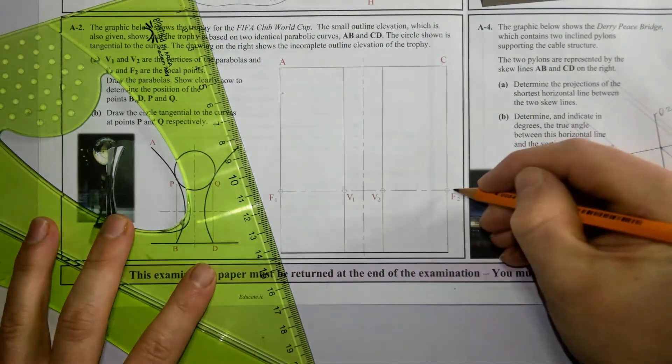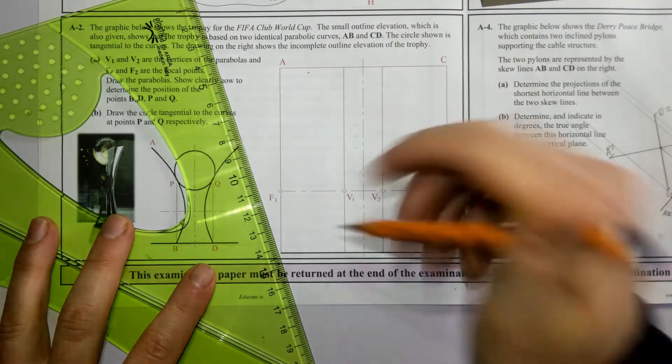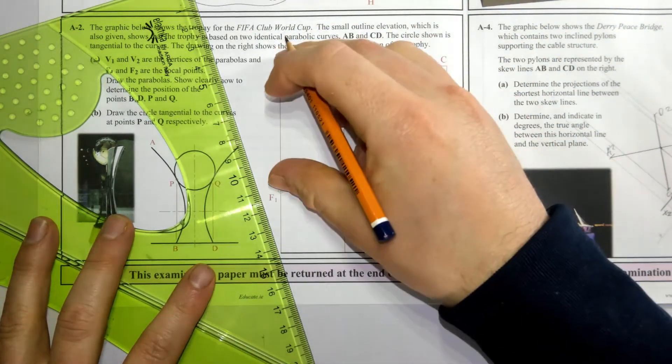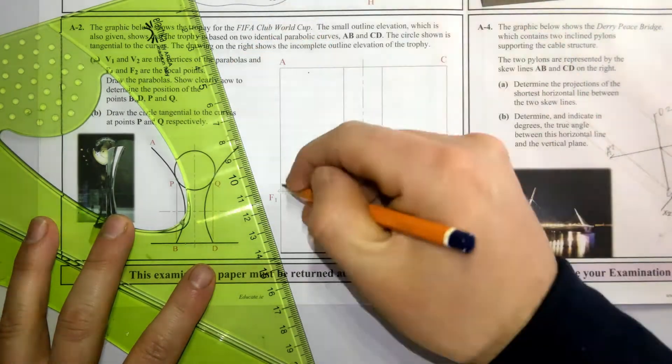Now we need to divide this line up here into any number of divisions, and this line needs to be divided up into the same number of divisions. I'm going to divide this line up into four. It doesn't have to be four, it could be three, five, seven, eight, nine. All that matters is equal divisions.